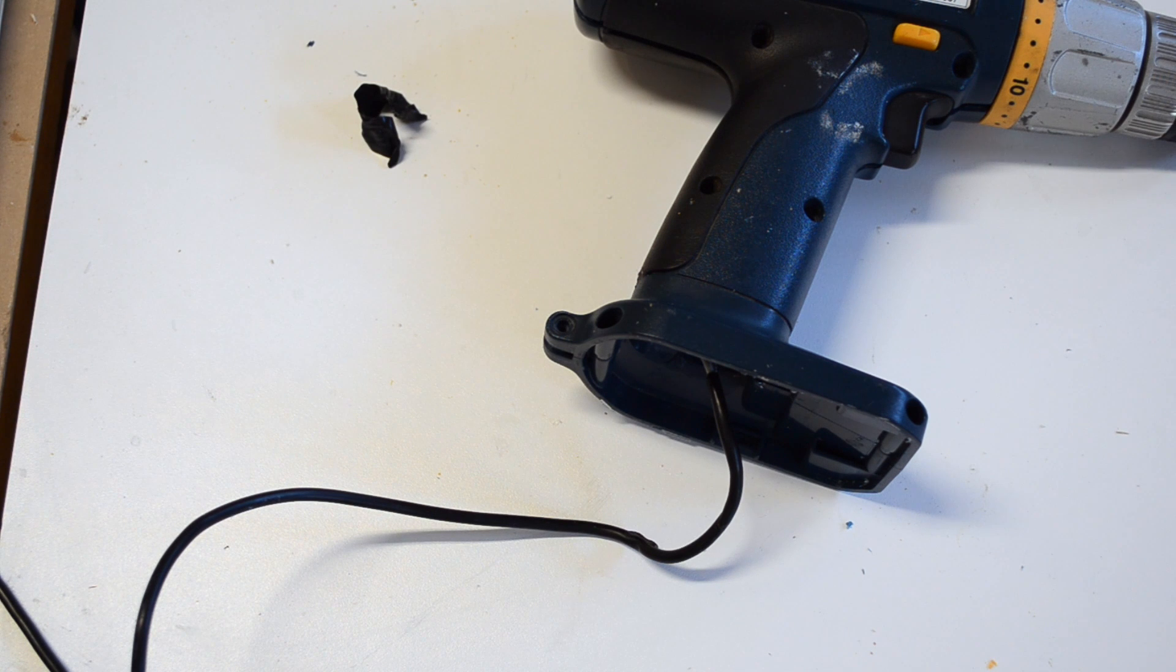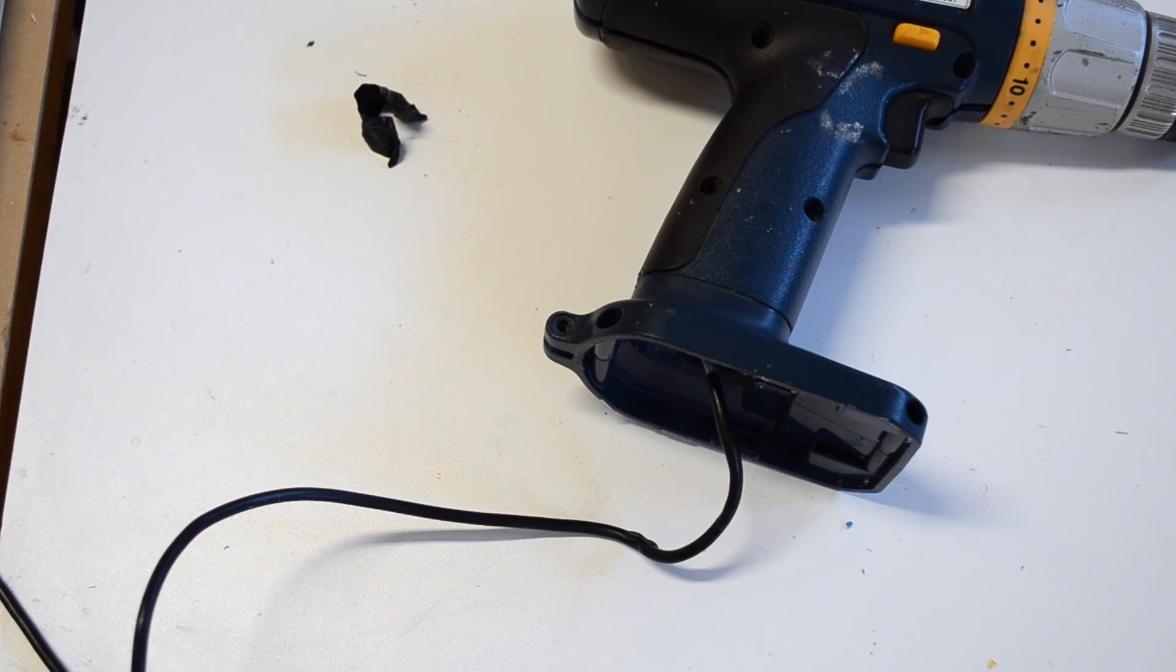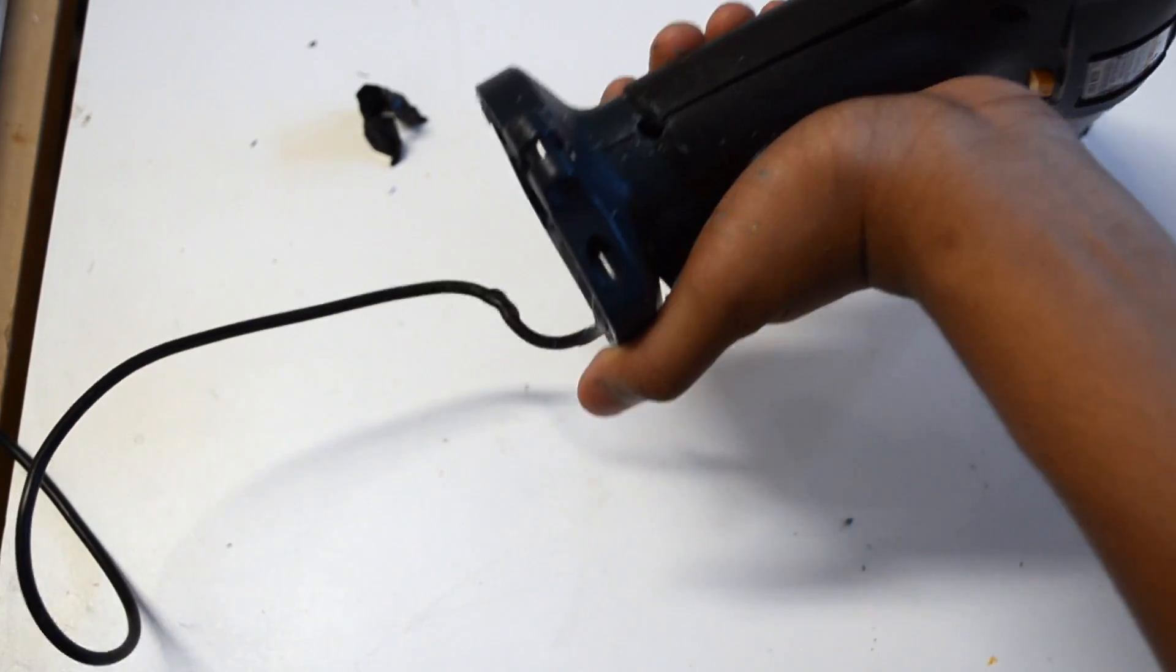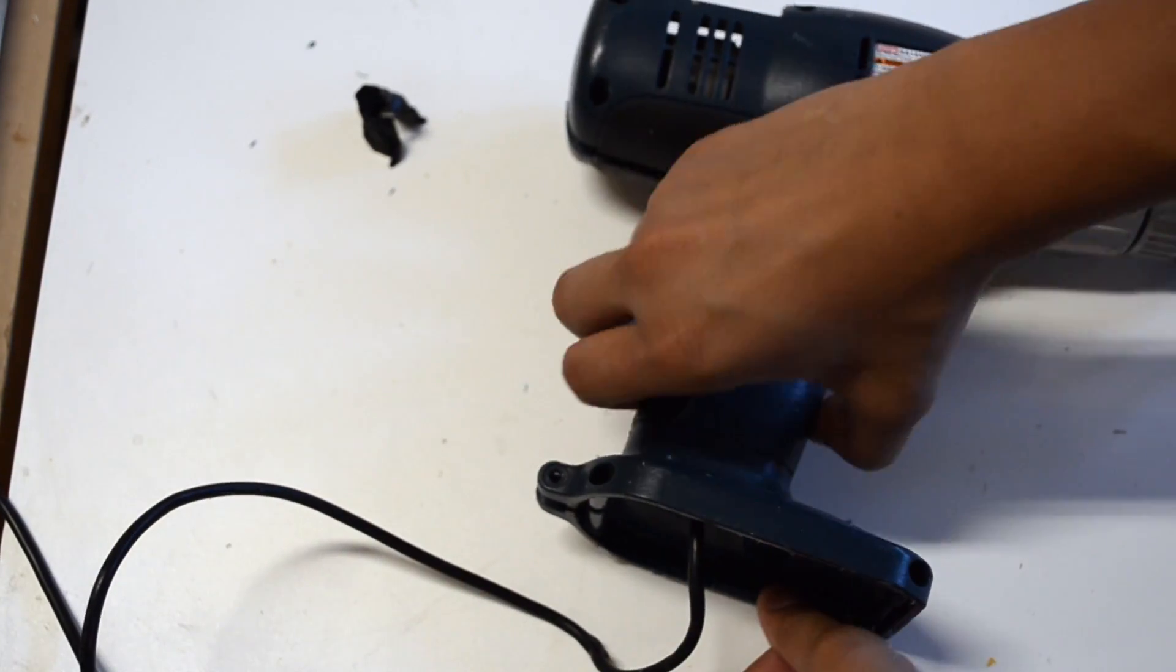At this point you could screw everything together and you would be fine. I however felt that the drill didn't look finished with the wire coming out of the bottom. Instead I decided to drill a hole in the side of the chassis to route the cable through it.